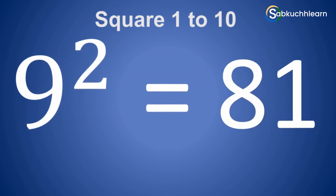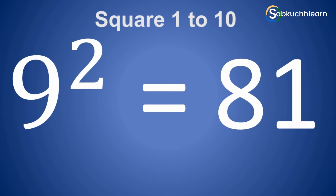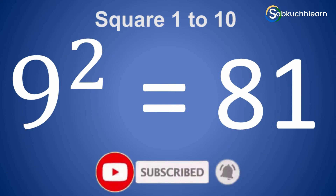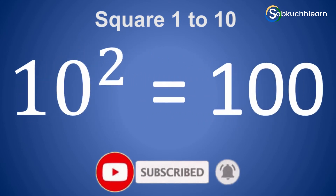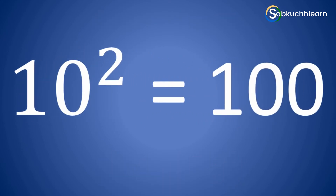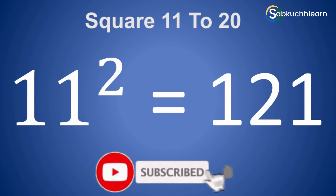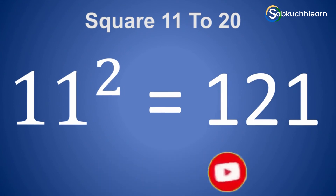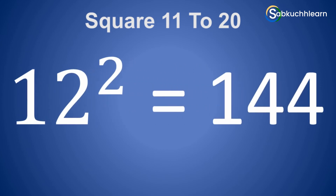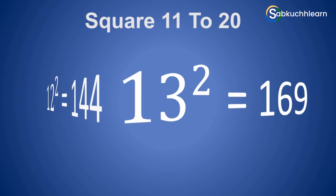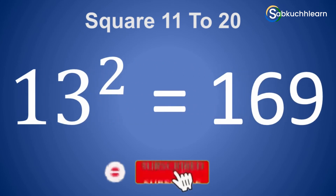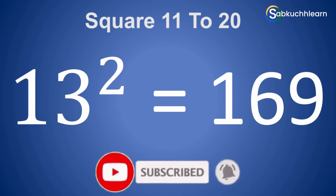9 square is 81. 10 square is 100. 11 square is 121. 12 square is 144.